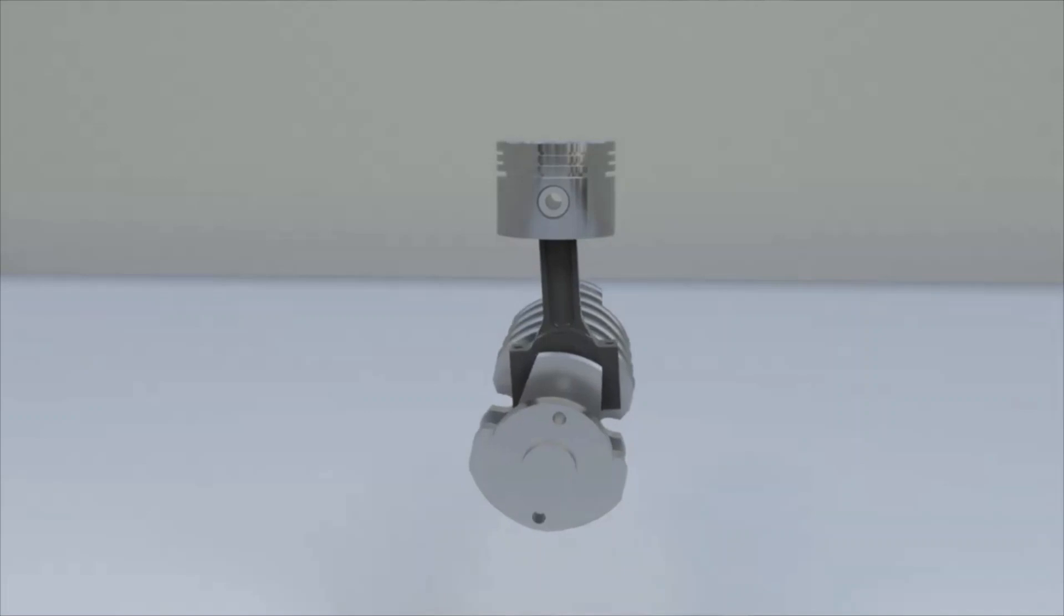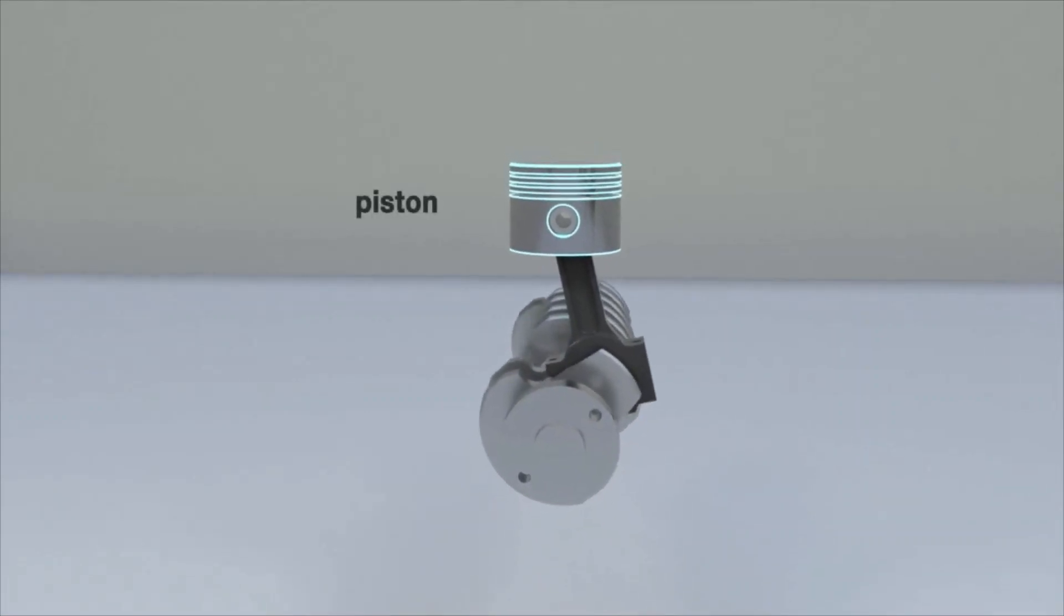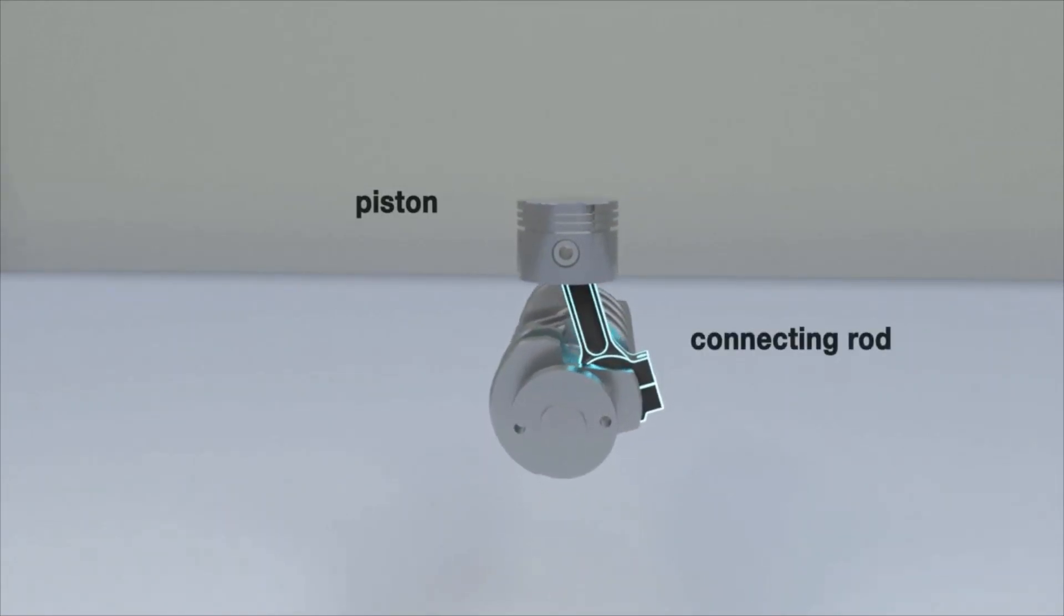The piston is placed on the connecting rod attached to the crankshaft. This construction allows converting the linear displacement of the piston into a rotating shaft.